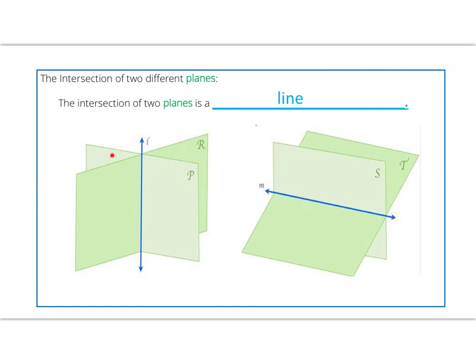When these two planes intersect one another, that intersection is a line. We can see it kind of in the fold here. The way we describe it using proper notation and naming: plane P and plane R intersect at line L.